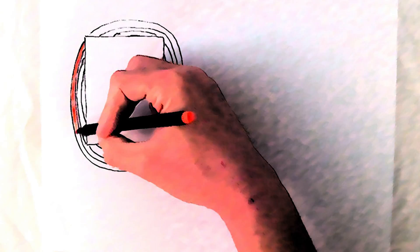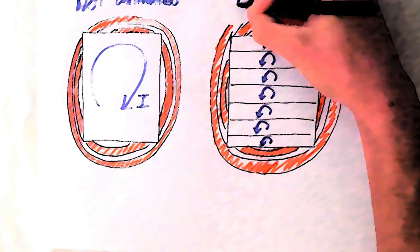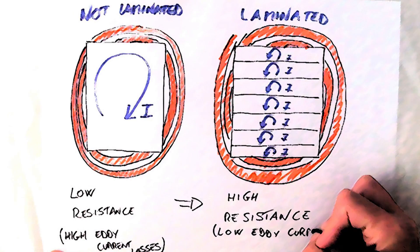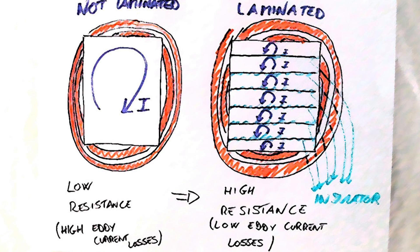By laminating the stator core we increase the electrical resistance of the stator without affecting too much its magnetic properties, and we force the eddy currents to circulate into much smaller paths. For this to work, each lamination must be insulated one from the other.